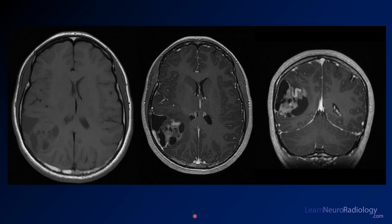On pre-contrast imaging, the mass has areas that are isointense to hypointense, with hypointense cystic areas. On post-contrast imaging, there is avid enhancement of the solid central components. There is also a dural component that is thick and enhancing — a dural tail — which is a classic finding for this lesion. Coronal post-contrast imaging confirms dense central enhancement with a surrounding cystic area.